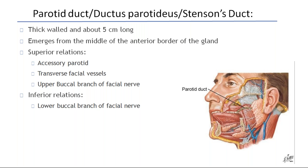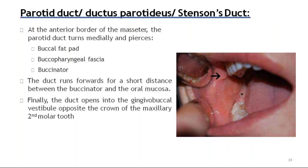The parotid duct, also called Stensen's duct, is thick-walled and about 5 cm long. It emerges from the middle of the anterior border of the gland. Superior relation is the accessory parotid, transverse facial vessels, and upper buccal branch of facial nerve. Inferior relation is the lower buccal branch of facial nerve. At the anterior border of the masseter, the parotid duct turns medially and pierces the buccal pad of fat, buccopharyngeal fascia, and buccinator. The duct runs forward between the buccinator and oral mucosa, and finally opens into the gingivobuccal vestibule opposite the crown of the maxillary second molar tooth.